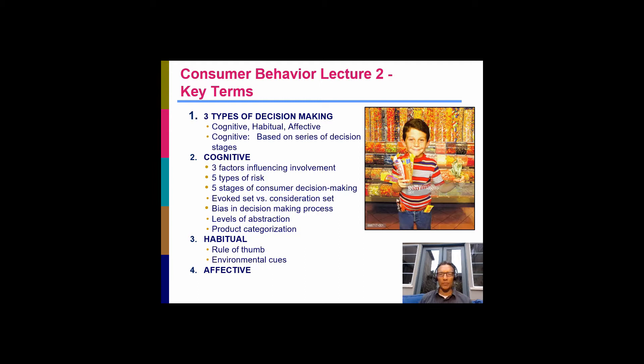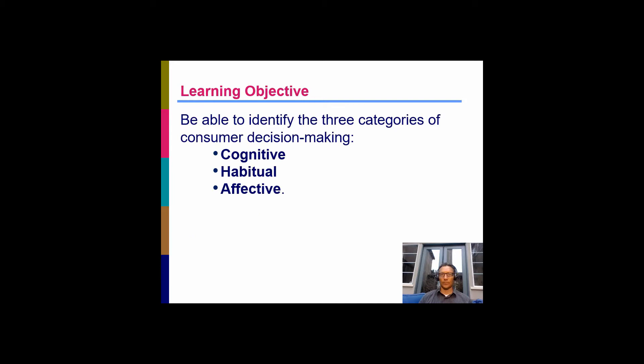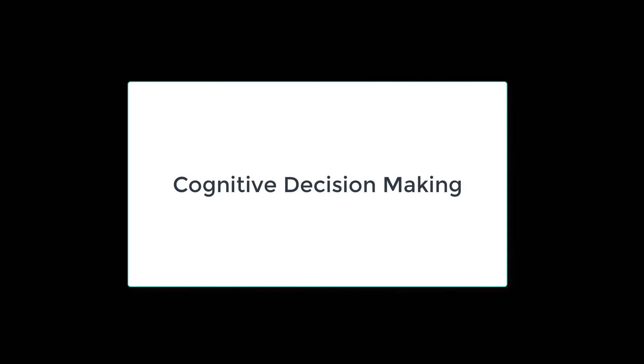Hey students, welcome to week four lecture two. We're talking about consumer behavior. This second lecture is going to talk about decision-making — the steps that we go through to rationalize our purchases. I'm going to focus in on three types of decision-making: cognitive, habitual, and affective. Your learning objectives are listed here, and my goal for you out of finishing this lecture is to understand these different categories.